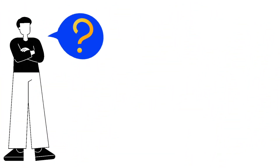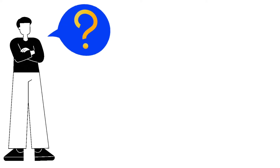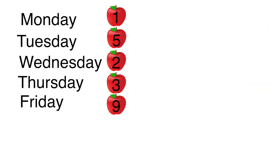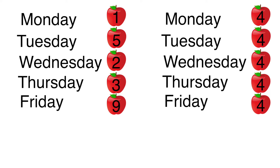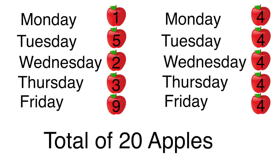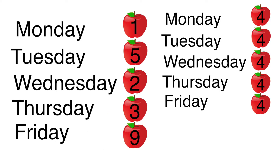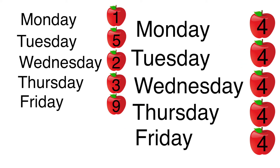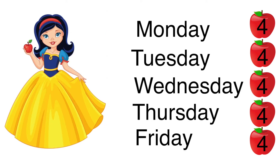When you get the average, you are thinking about how many apples she ate each day. Getting the average lets us think about what it would be like if all the numbers were the same. The visual on the left and the visual on the right both have a total of twenty apples. The left visual shows what really happened, and the right visual shows what it would look like if the same number of apples had been eaten each day.